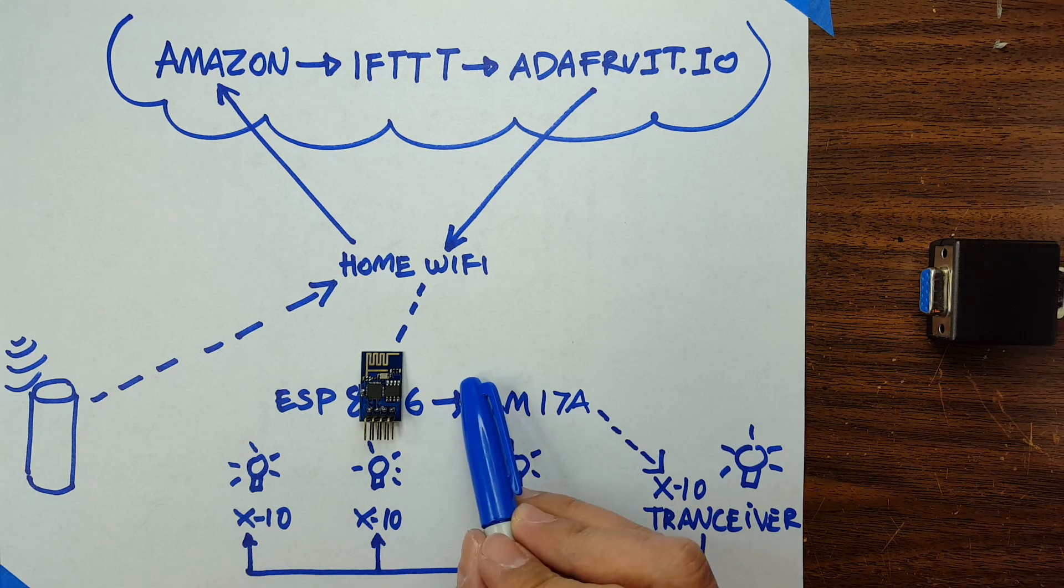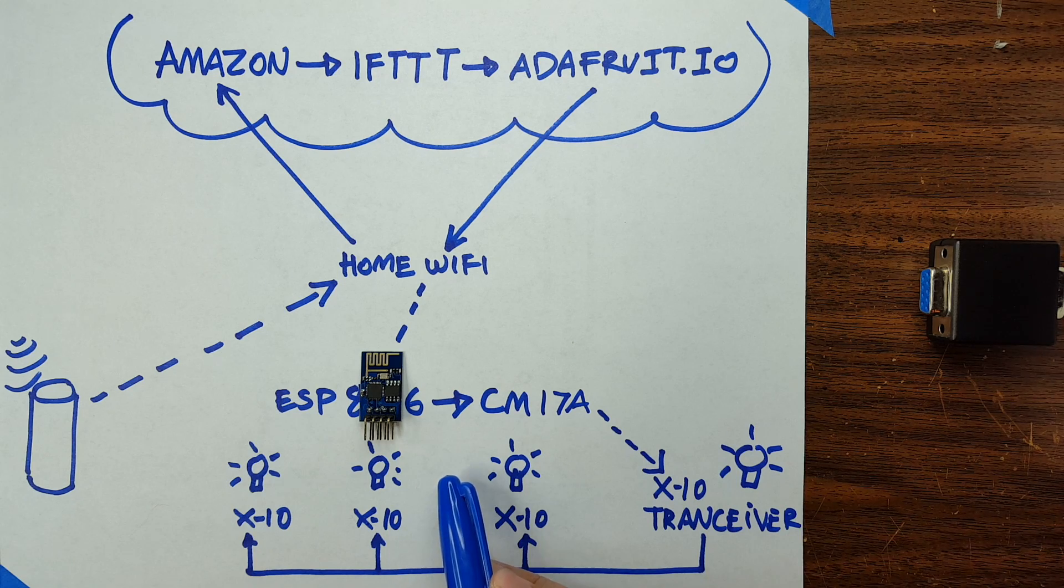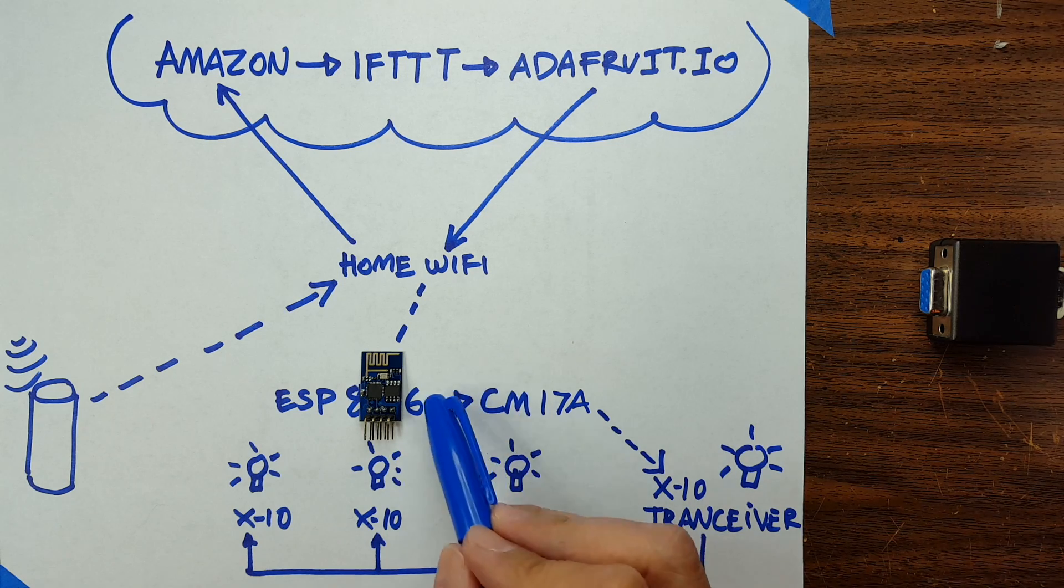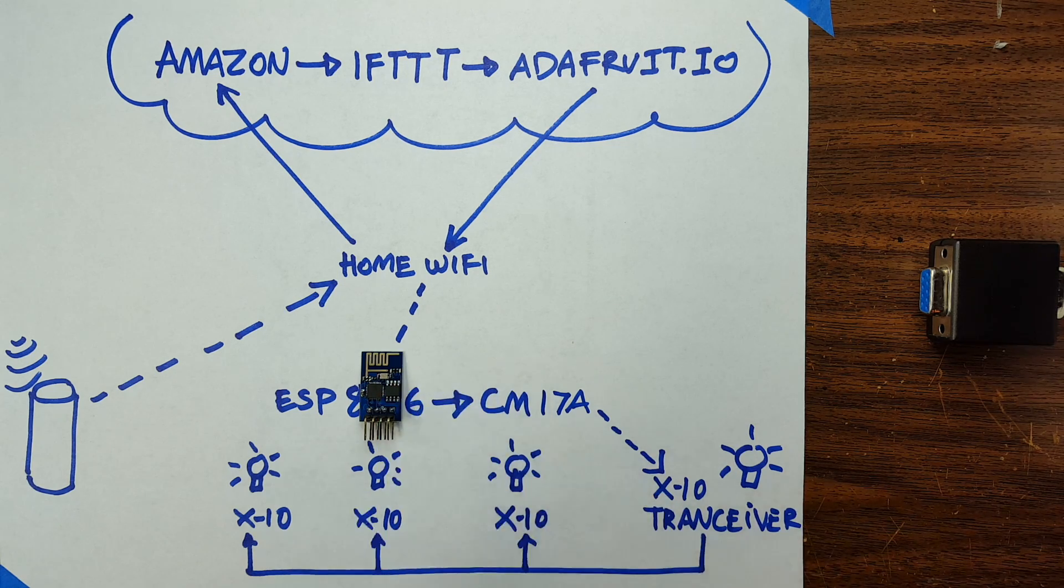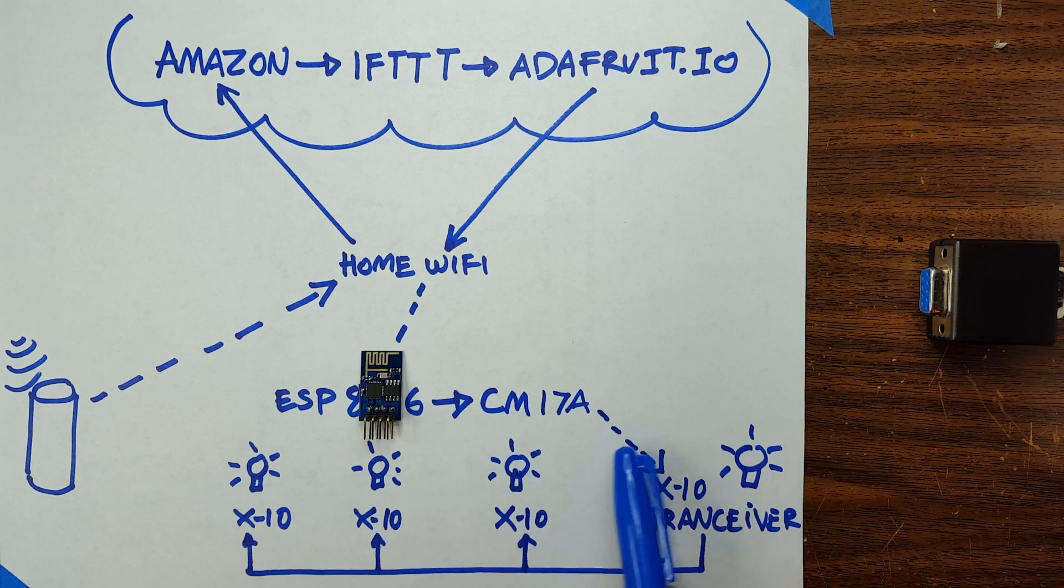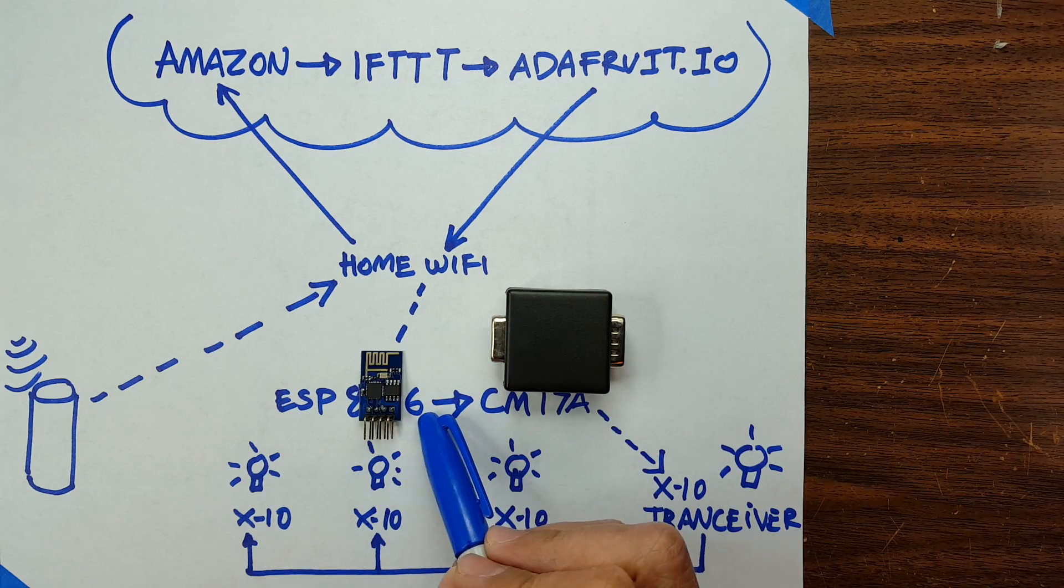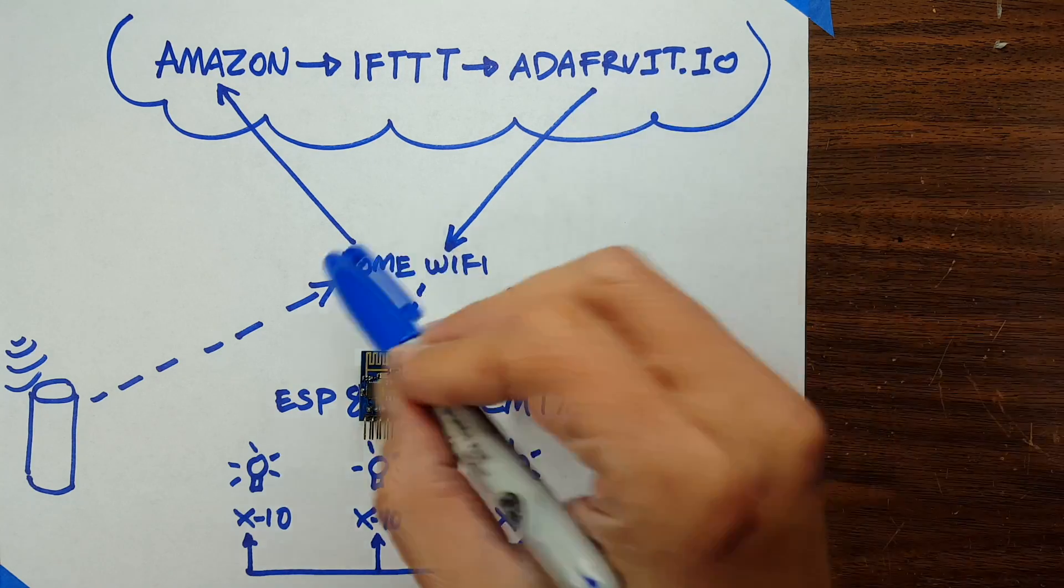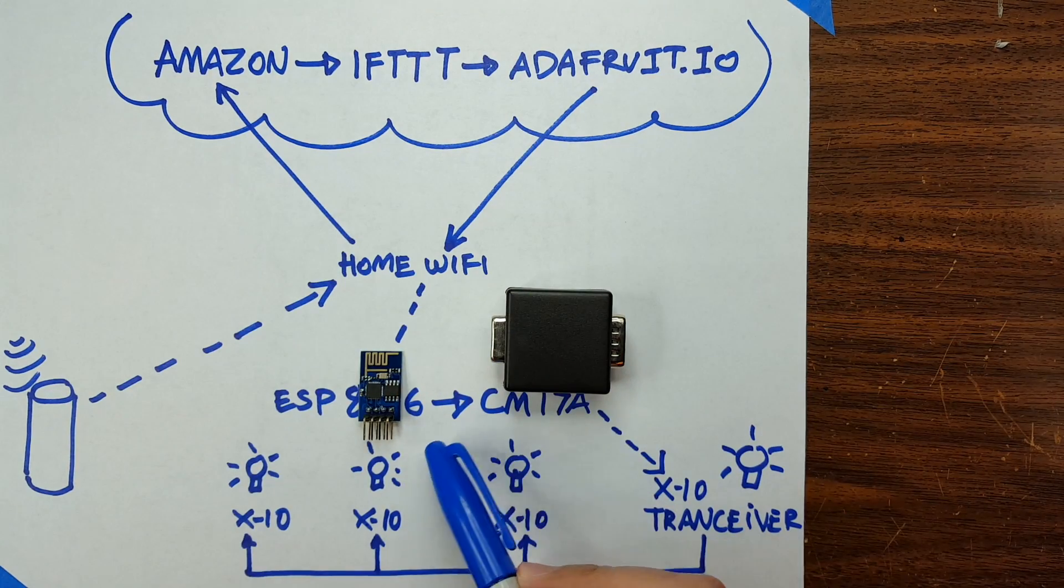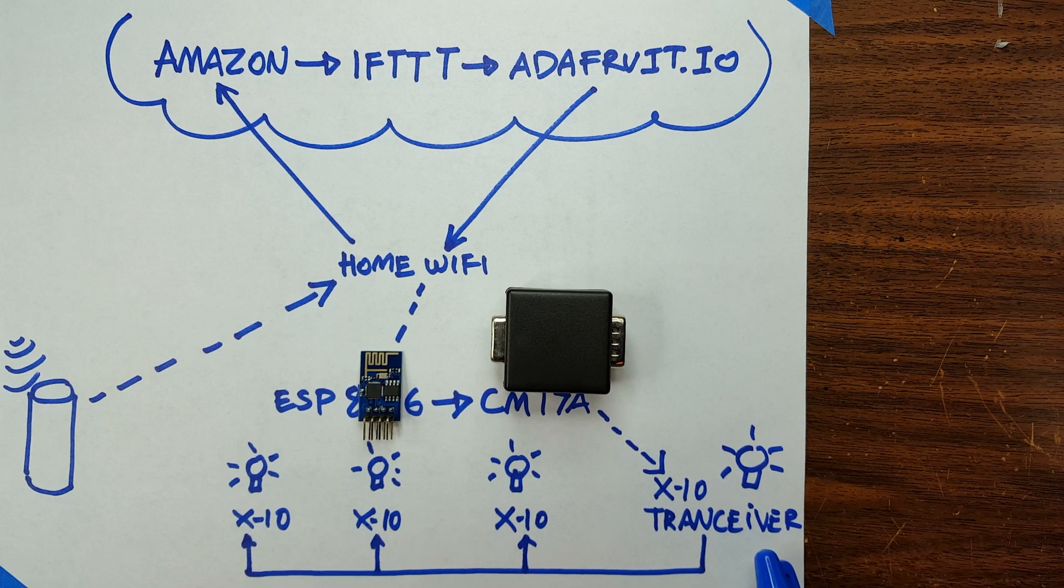So you might be wondering why didn't I just put a relay over here. Well if I put a relay over here, that means I can only control one device or maybe two depending on how many ports you have on the ESP. That means you have to maintain a whole bunch of these. Well by doing this, now there's only one receiver in the house that talks to Adafruit.io, and it actually could control as many of these X10 devices as I want because it's just a matter of sending the command to the proper device unit.